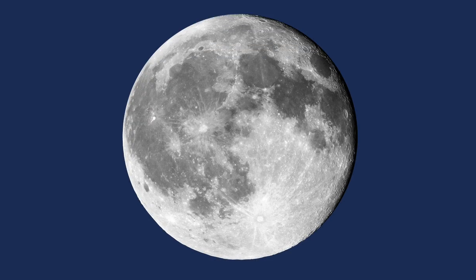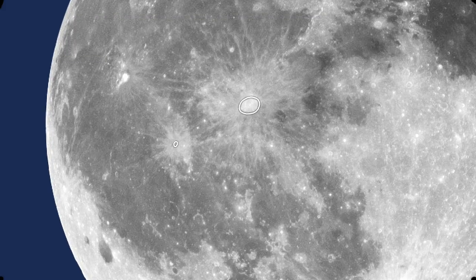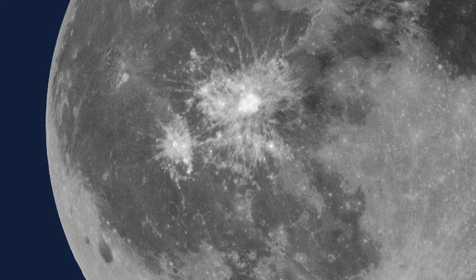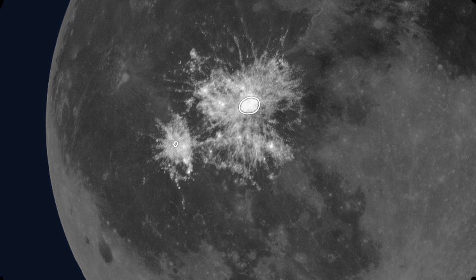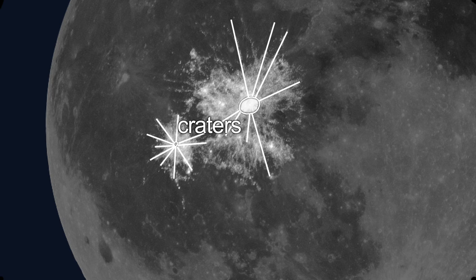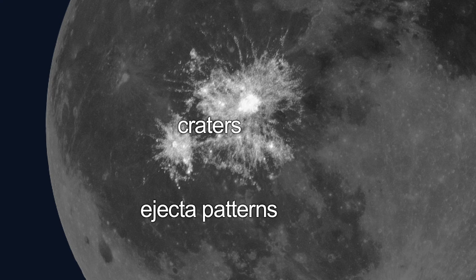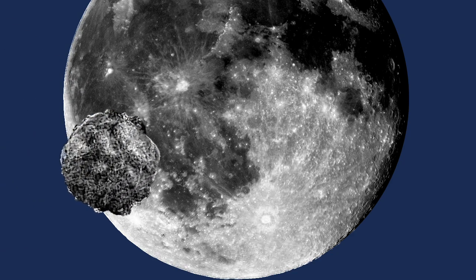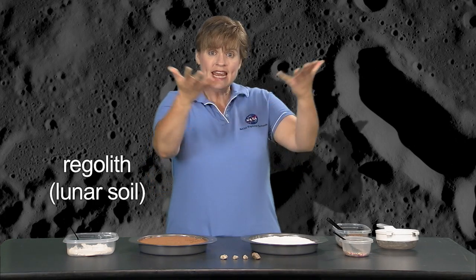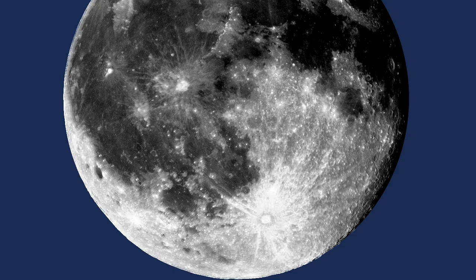Go outside tonight, take a look at the moon, and you'll see these circular features with lines coming out. Those circular features are craters, and the lines coming out are ejecta patterns — rays. The way those craters were formed were from rocks coming from outer space and smashing into the surface of the moon, pulverizing the soil there, what we call regolith, and spraying it out along those ejecta pattern rays.